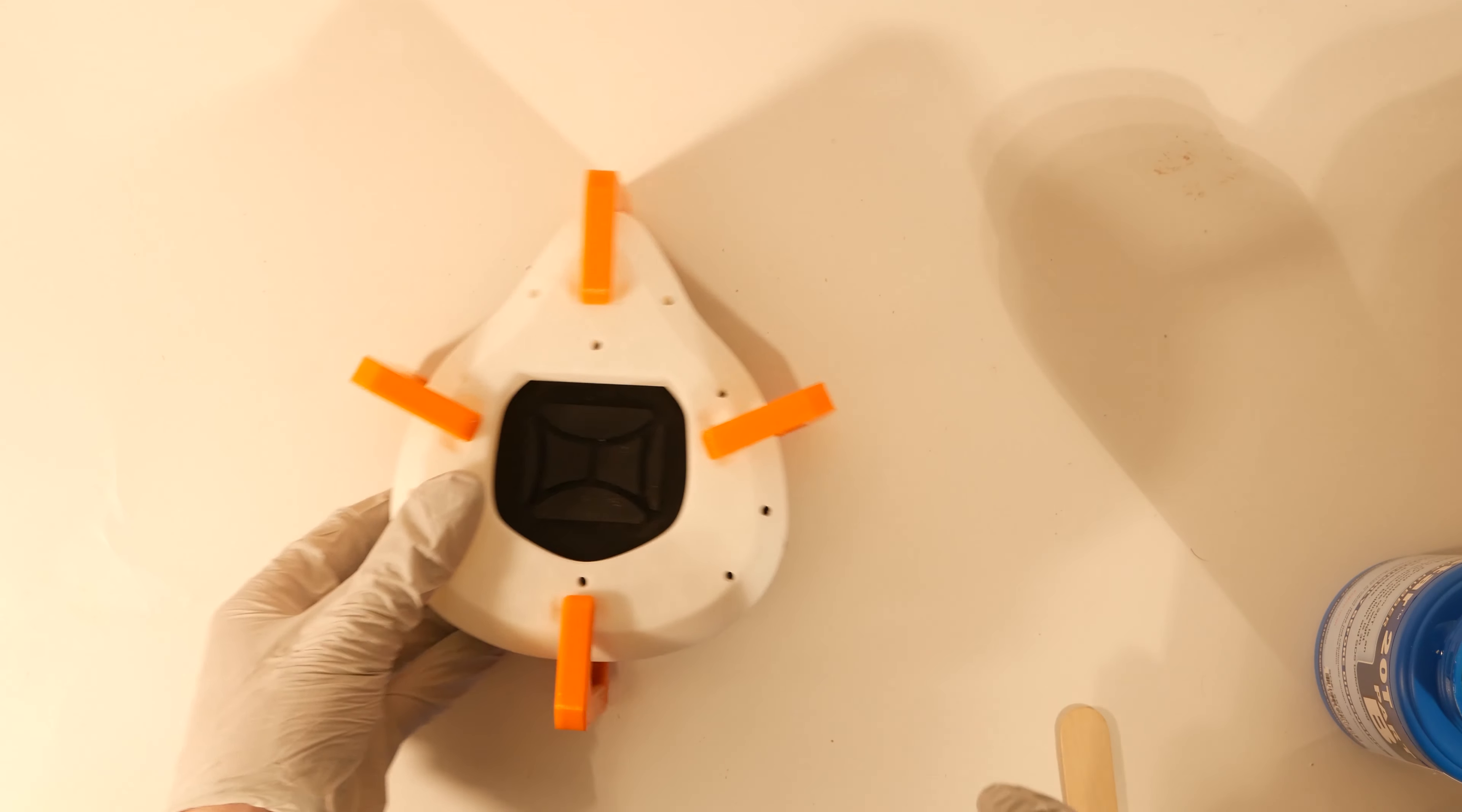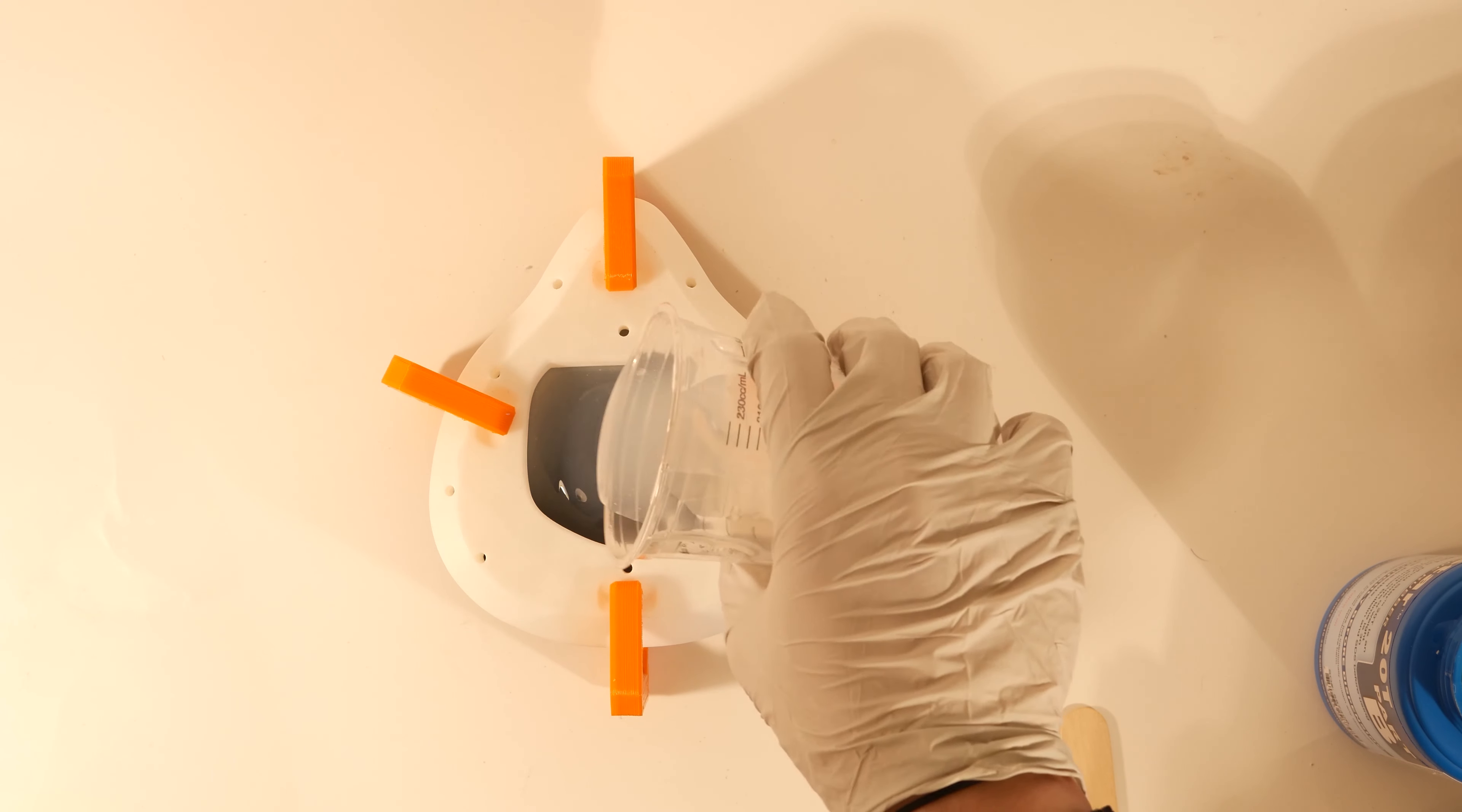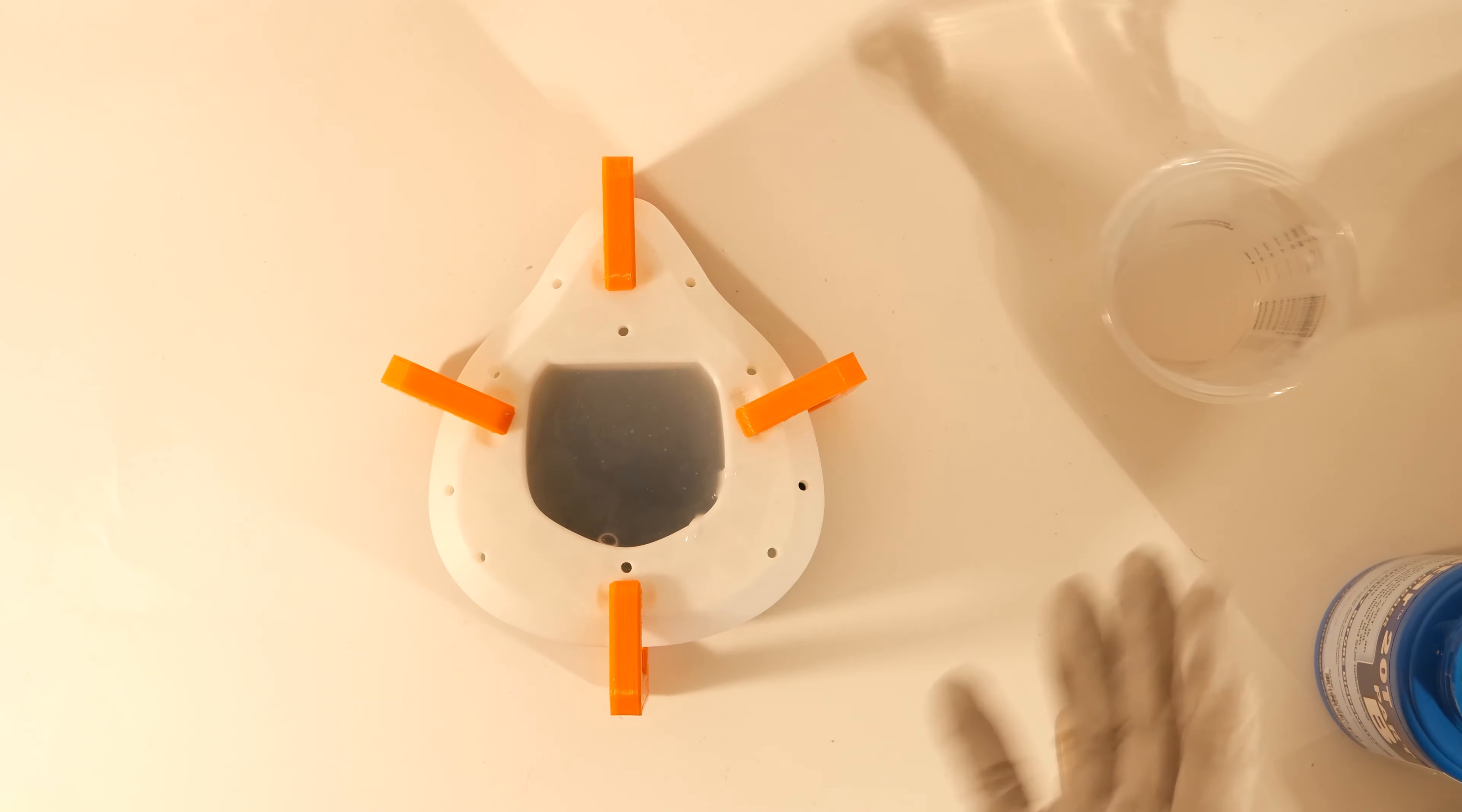Now we're going to pour it into the mold. Simply pour it in the top. Try and stay as close to the opening as you can. Do not introduce any more bubbles than you have to. A little bit extra just to be safe. You can use less if you want but you play the game of not having enough. You can see a few bubbles coming up there. That's good. You want them to kind of work out.